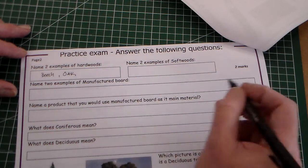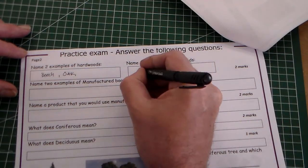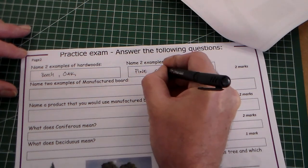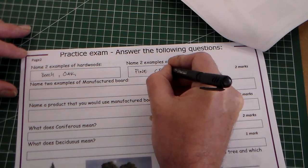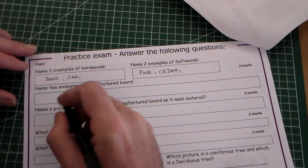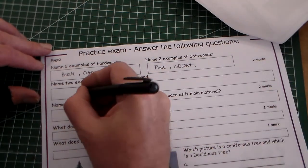So two marks for each of these. Two examples of softwood, I'm going to say pine and cedar. Name two examples of manufactured board. Obviously we've just got to add two, so it's just simple again.